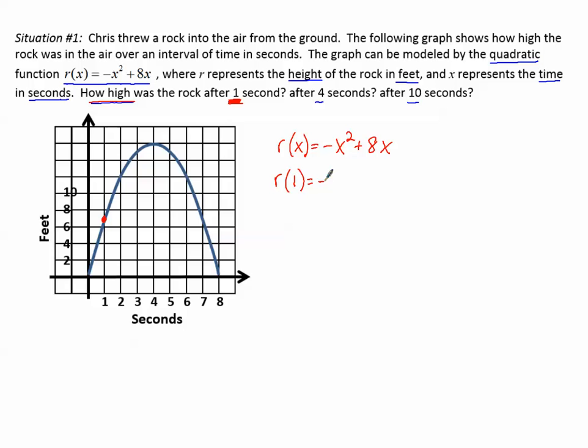So r of one equals negative one squared plus eight times one. One squared, we do exponents first, is one times one, which makes one, and I put the negative in front, plus eight times one, which makes eight. Negative one plus eight makes seven. So how high was the rock after one second? It was at seven feet.